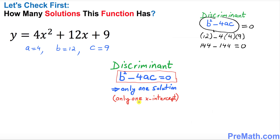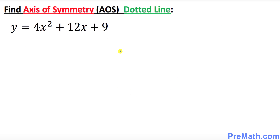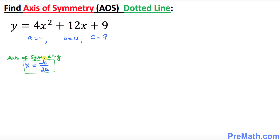One solution means only one x-intercept — just keep that in mind, it's going to help us in the next few steps. Now we are going to find the axis of symmetry. Here's the formula: x equals negative b over 2a, where we have our a, b, and c values.